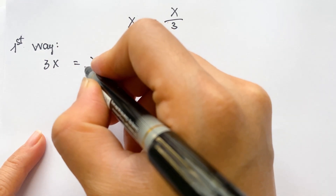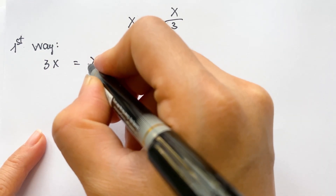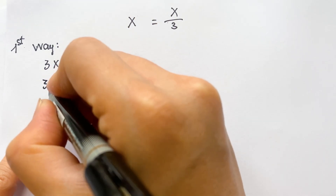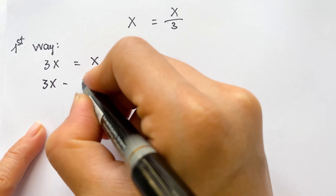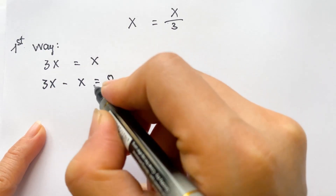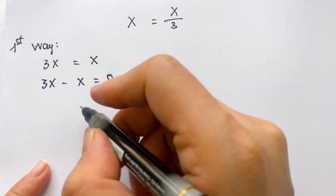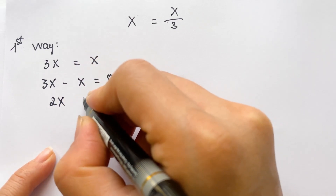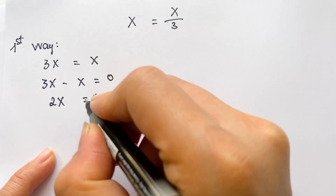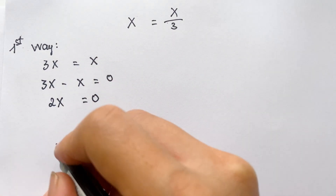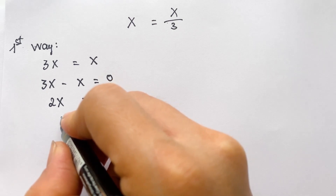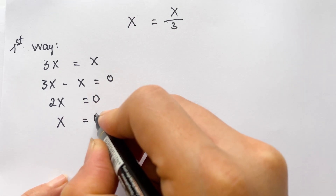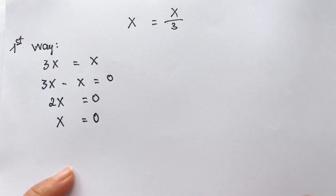Then we move x to the left hand side, so we need to change the sign. We have three x minus x equals zero, and then we also have two x equals zero, so we can get the answer x equals zero.